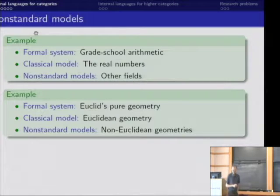A slightly more advanced example is Euclid's pure geometry, which Euclid thought he was studying geometry of flat space in the real world. And eventually, people realized that there were all these non-Euclidean geometries as well, but the same pure geometry without using the parallel postulate applies in all these cases. And this is also a really useful thing.